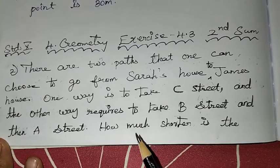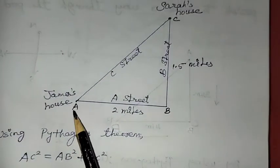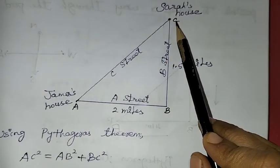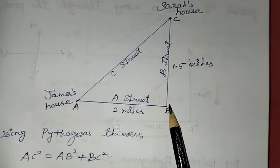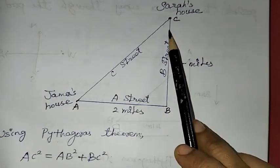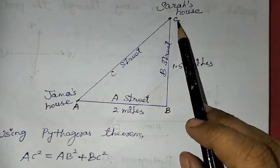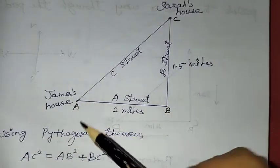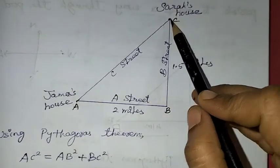I will explain the diagram. That is James' house, Sarah's house. One way is to use A Street, to go from B Street. This diagram shows B Street, A Street, and C Street. Here is James' house, here is Sarah's house.